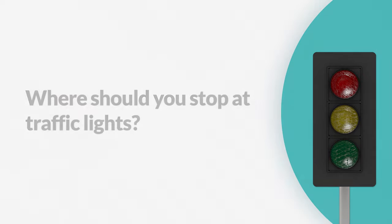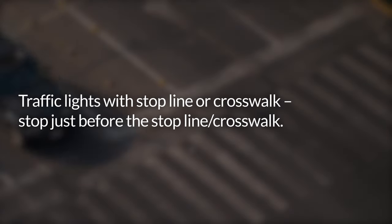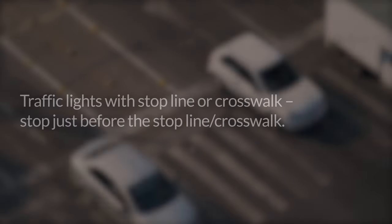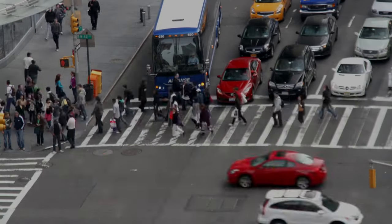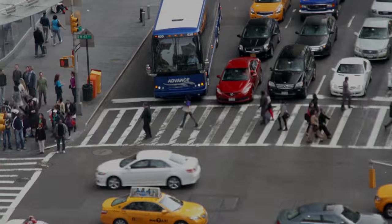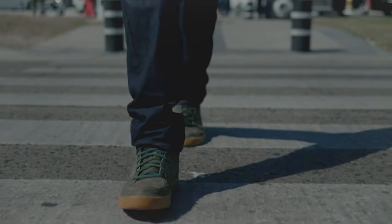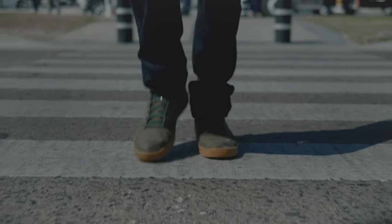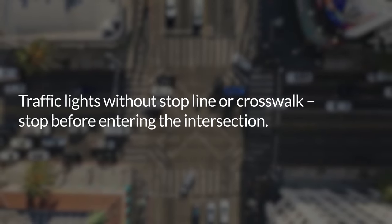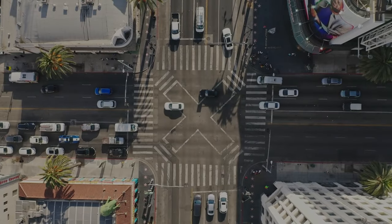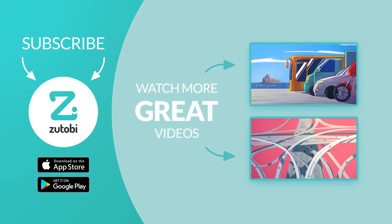Where should you stop at traffic lights? At traffic lights with a stop line or crosswalk, stop just before the stop line or crosswalk — don't stop too far away, as some signals have detectors near the line and won't change to green unless a waiting vehicle is detected. At traffic lights without a stop line or crosswalk, stop before entering the intersection.